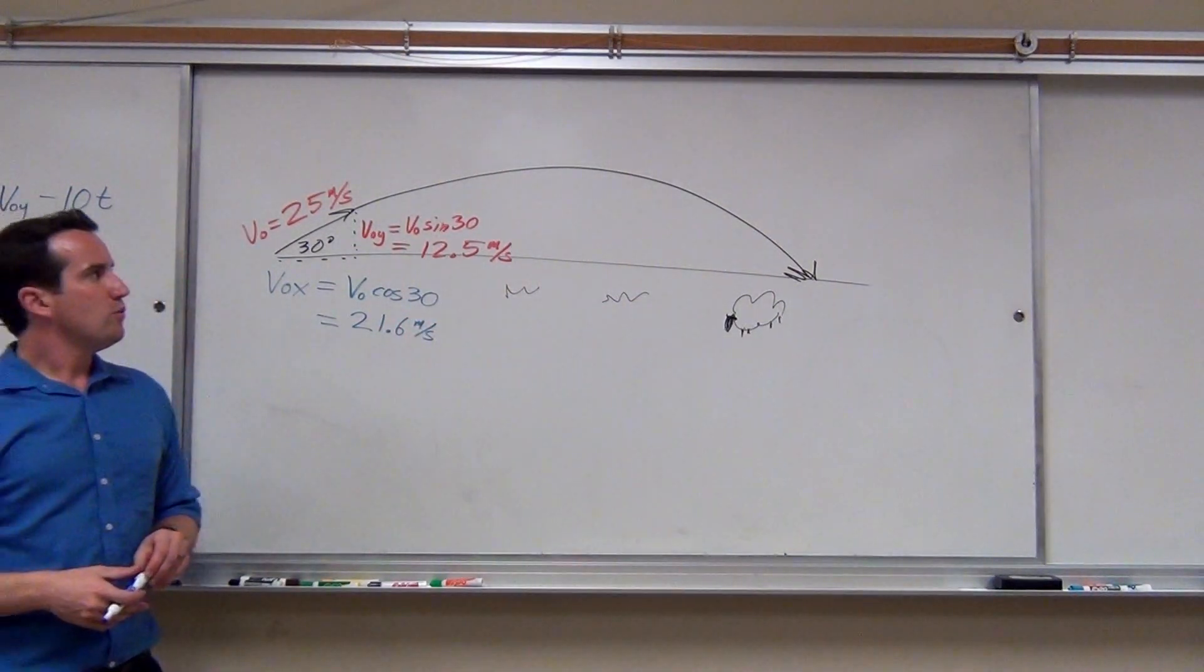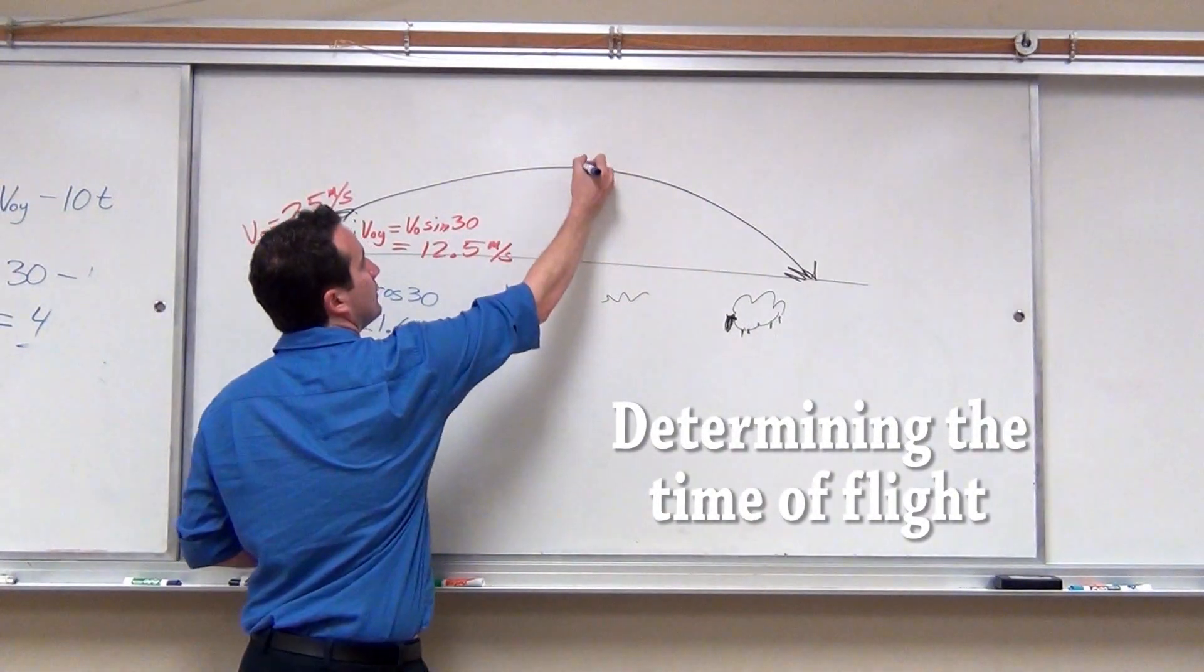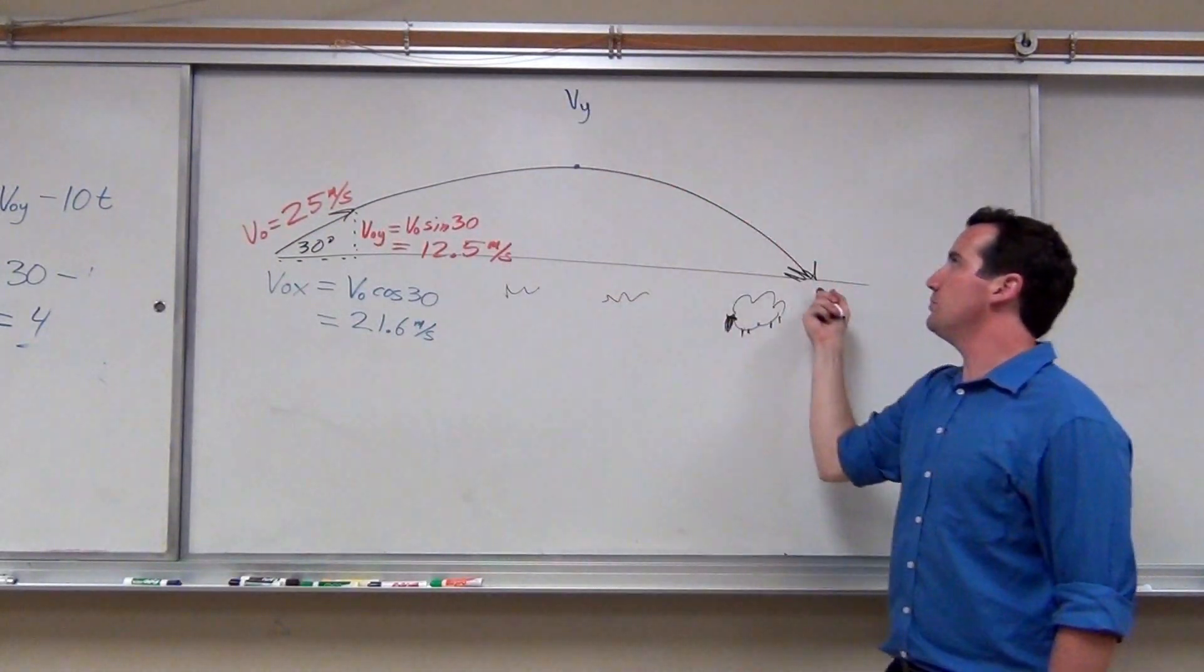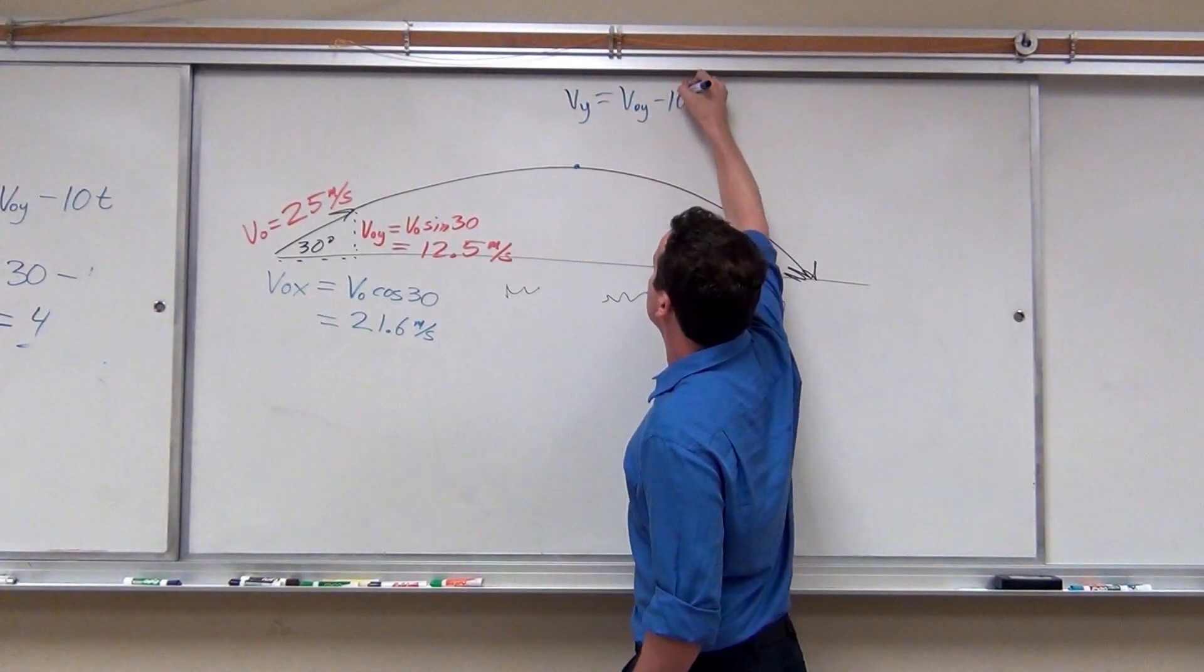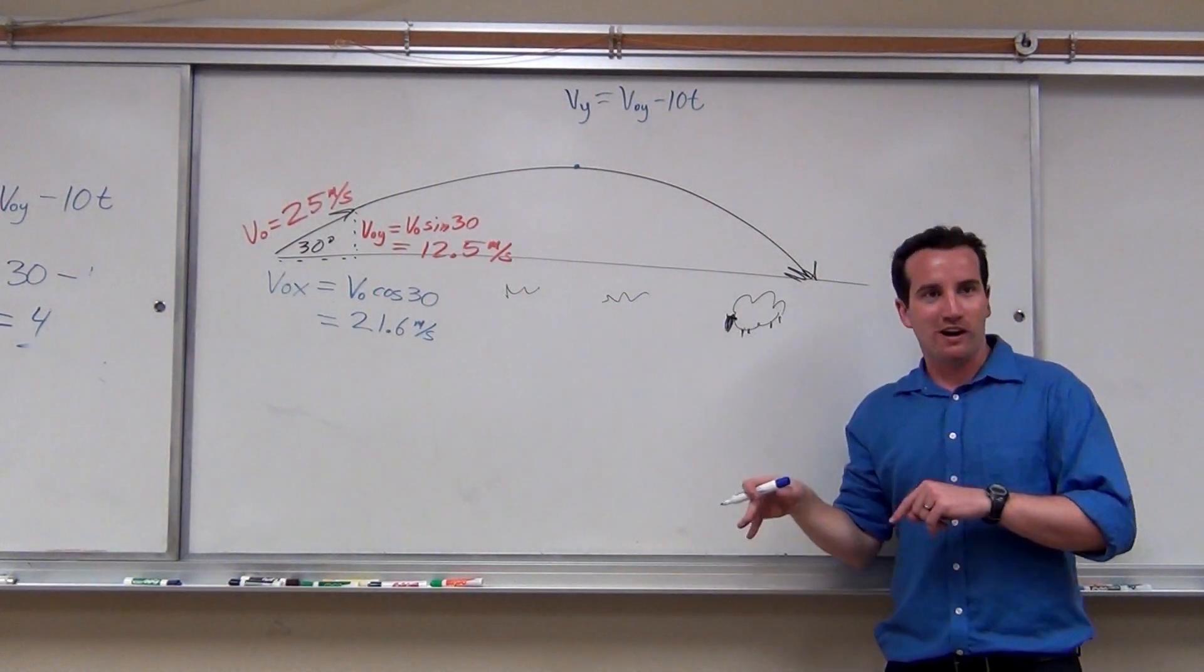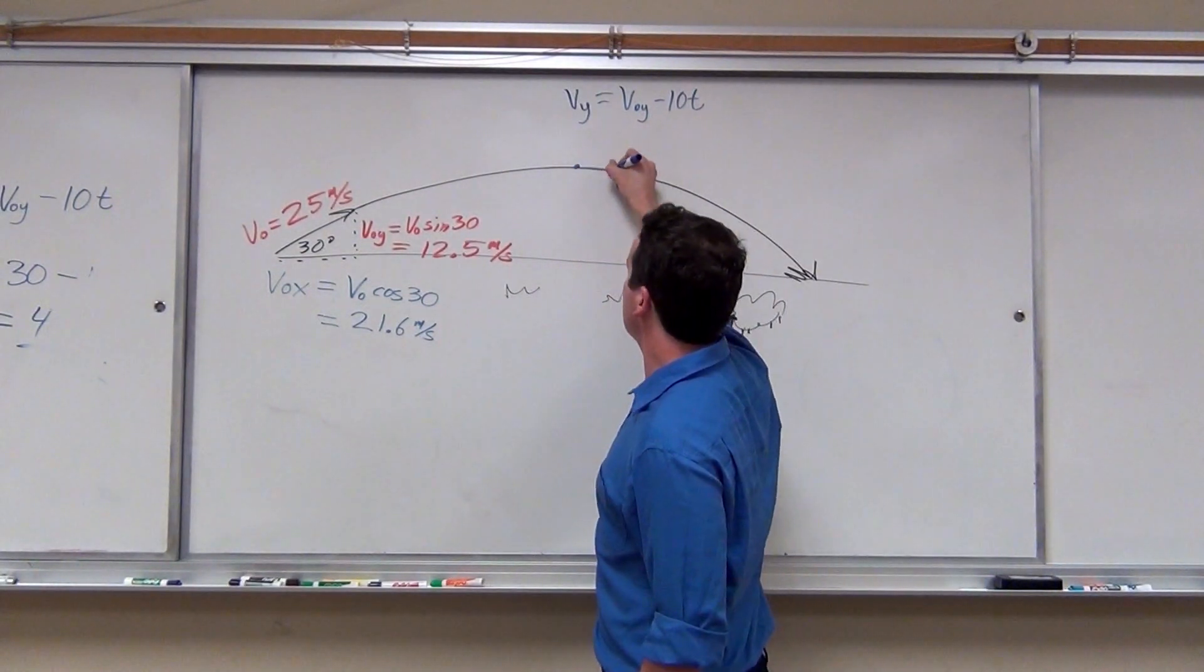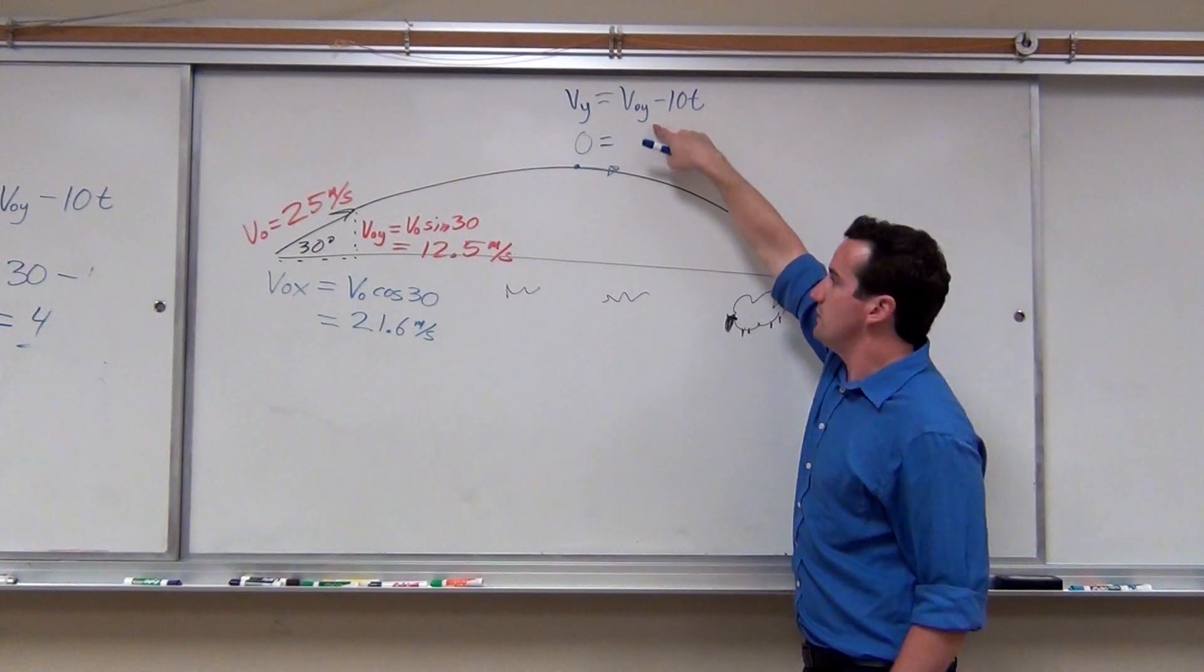When do you think it's at the highest moment? We should be able to calculate it from the VY formula. We're going to find the highest moment and then we'll double it to get the total time. Do you know why I'm using the VY formula? Because VY is zero at the highest moment. It's only moving horizontally. But VOY we already calculated is 12.5. So some number times 10 minus 12.5 will add up to zero.